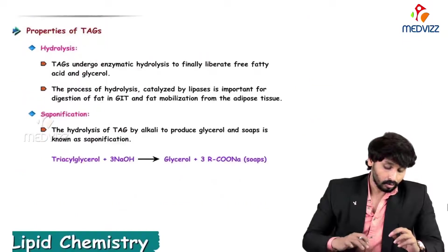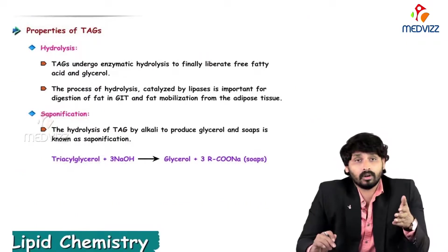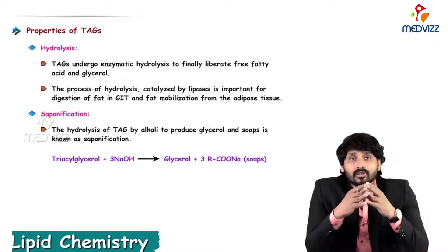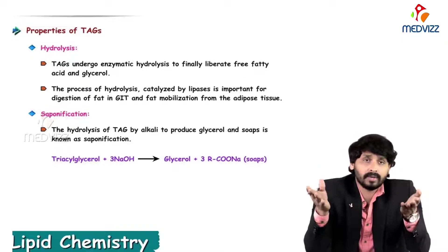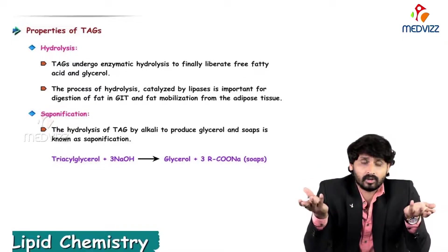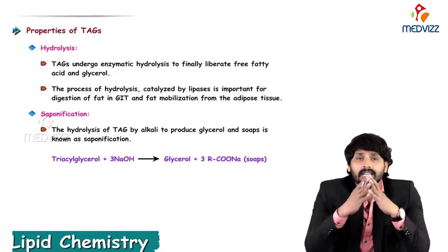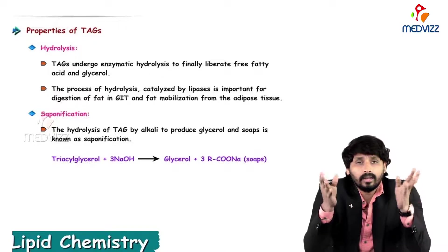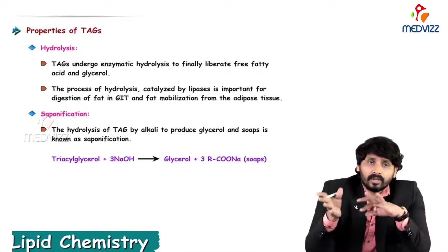Triacylglycerol. Talking about the properties of triacylglycerol - hydrolysis. When triacylglycerols undergo enzymatic hydrolysis - our food consists of lipids, mainly triacylglycerols, and this is how they are digested. Once they enter the digestive system, because of the acidic nature in the stomach, they are broken down to fatty acids and glycerol, and then they are absorbed into the intestinal lumen.